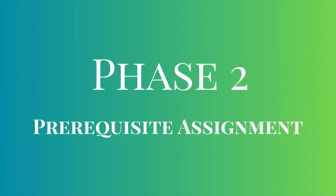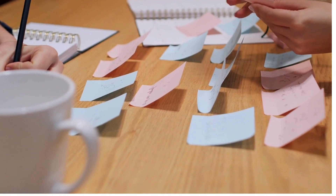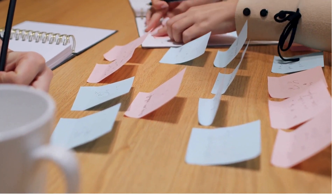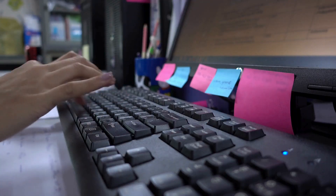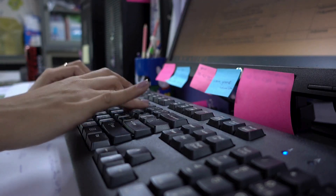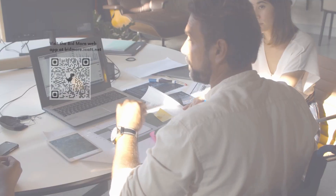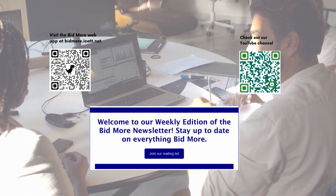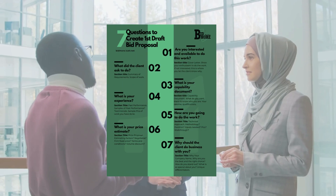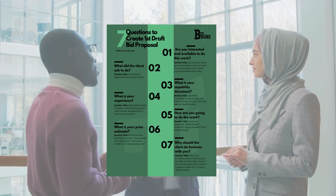Phase two: prerequisite assignment. Participants engage in hands-on tasks to familiarize themselves with essential Bidmore resources. By following written instructions, they access key online resources such as the web app, YouTube content, newsletters, and the seven questions essential for successful bid proposals.